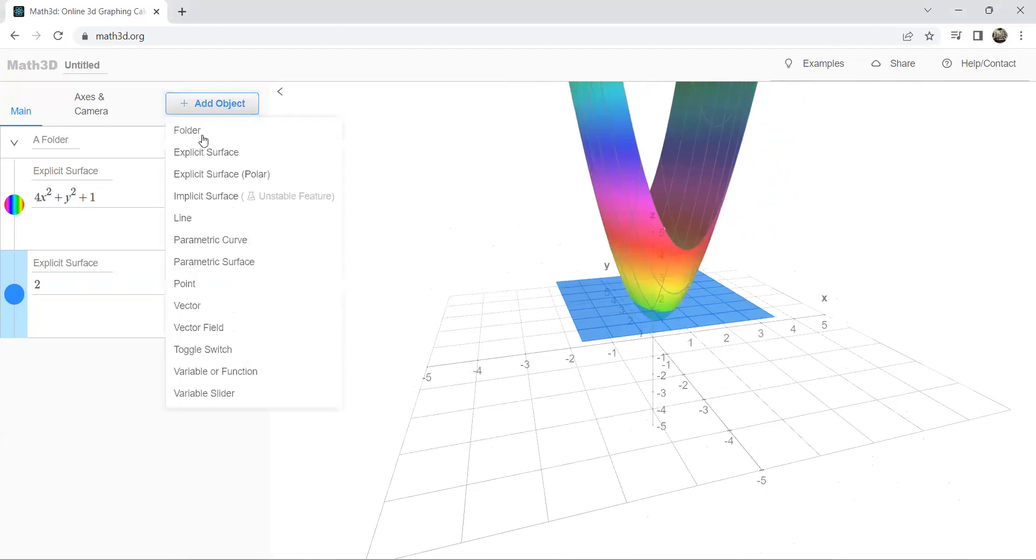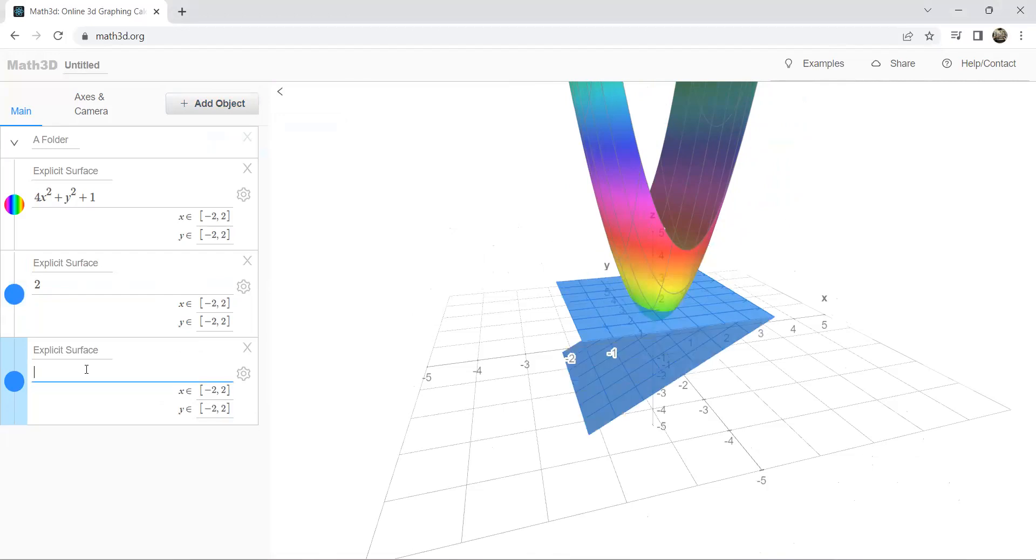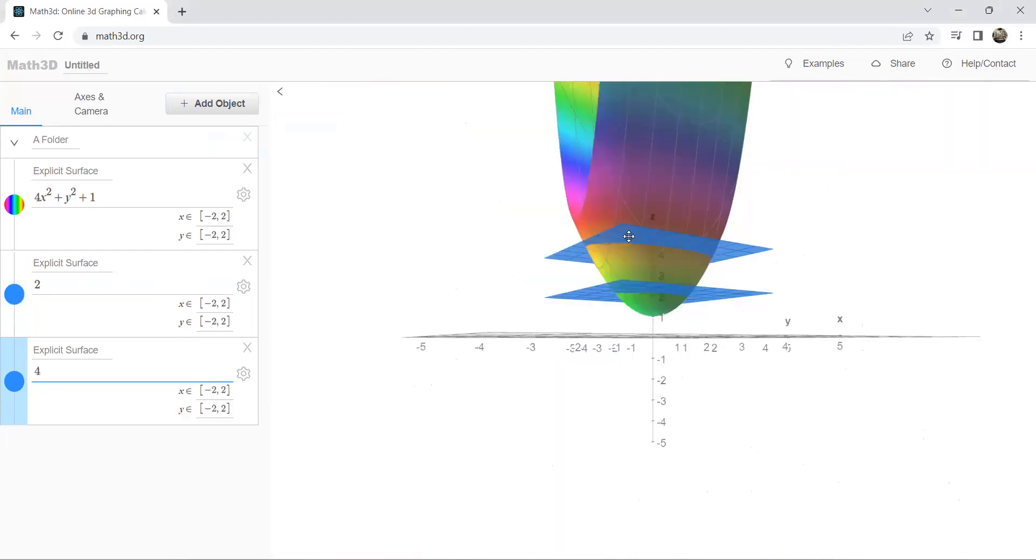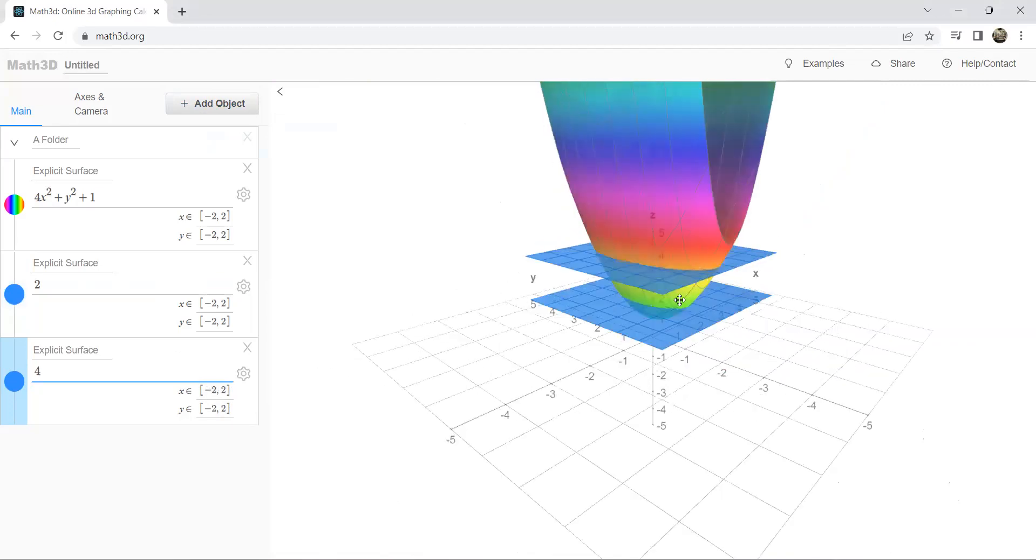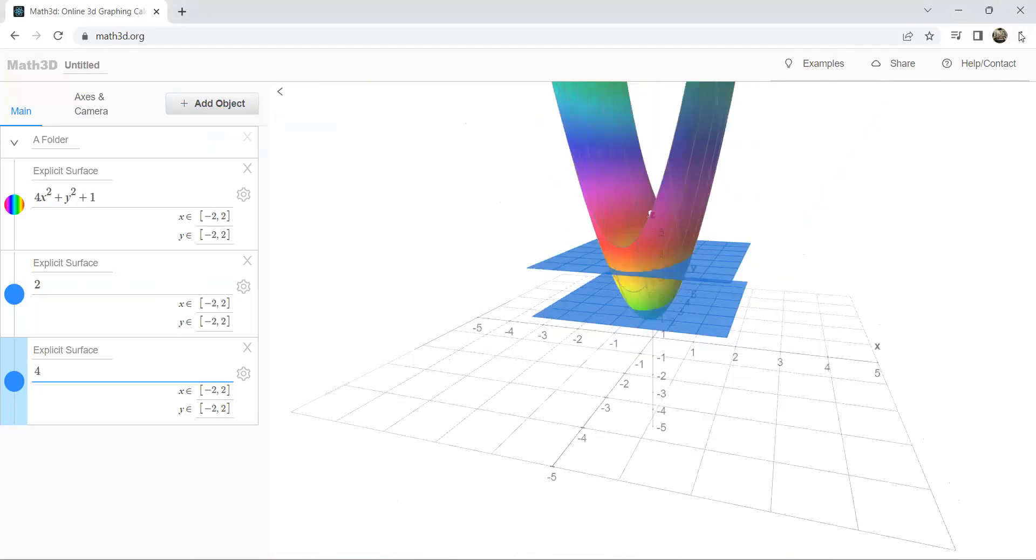Let us add another explicit surface, like 4. And you can see another slice of this surface. And we saw the algebra and the calculus behind it on the board.